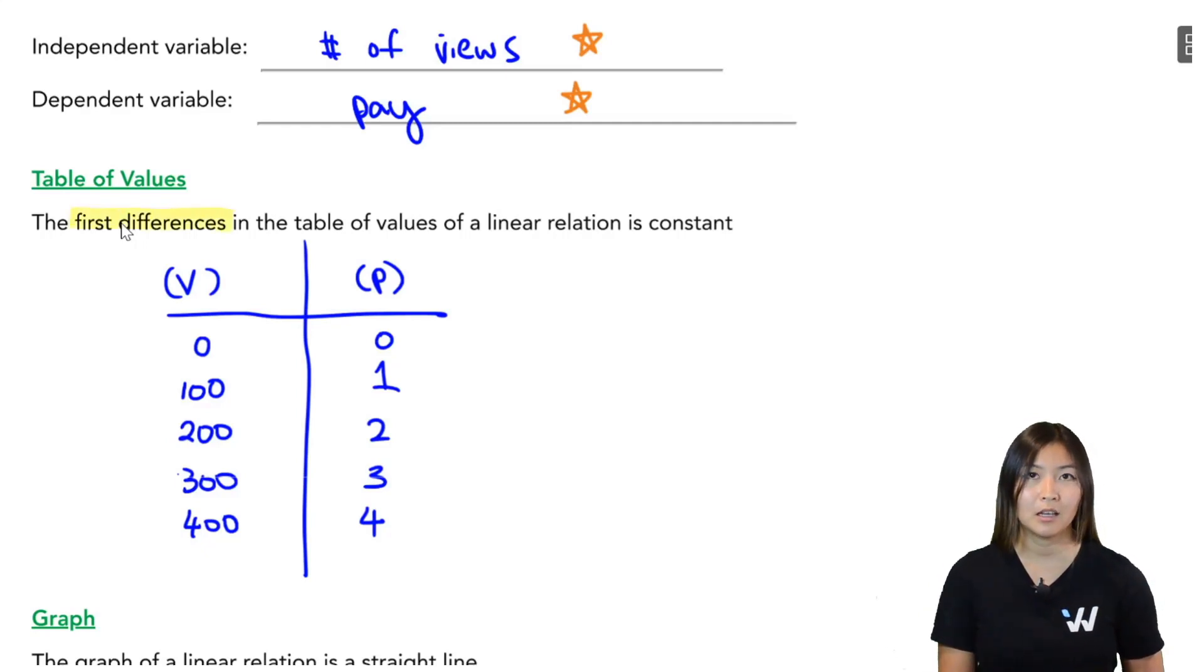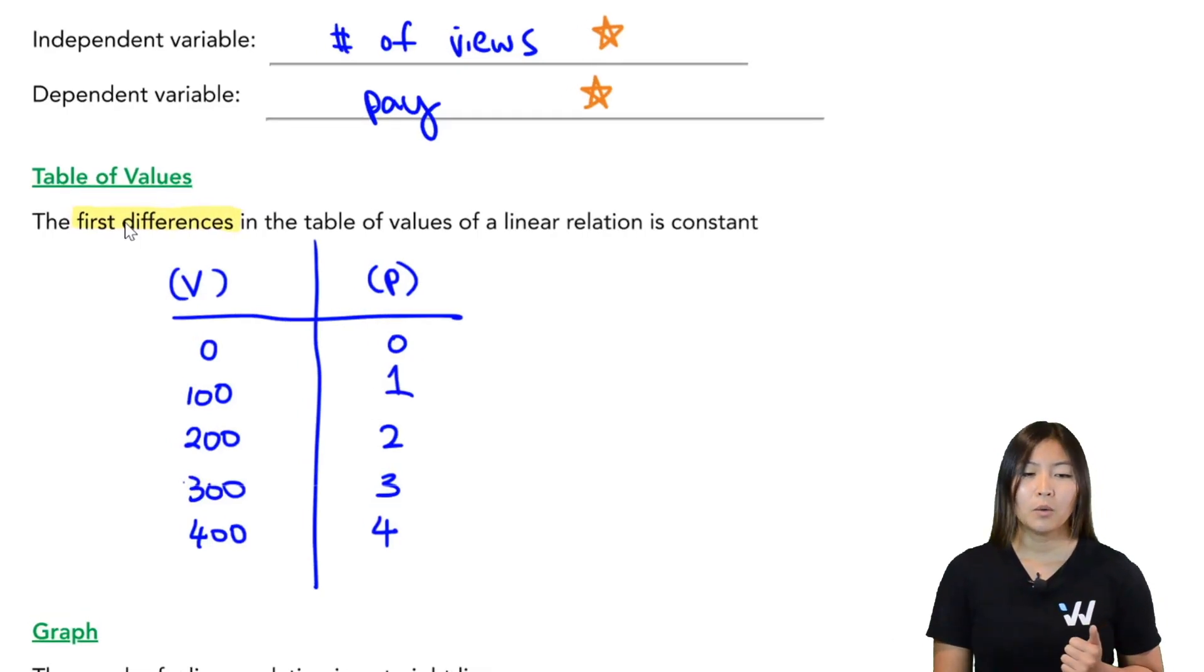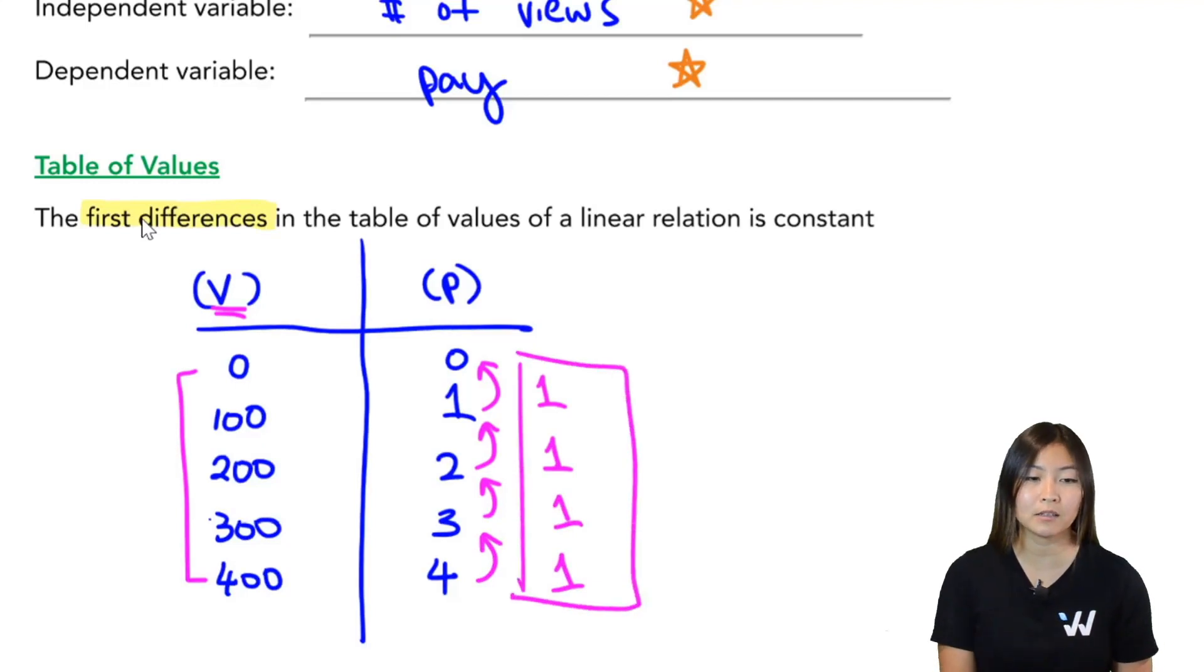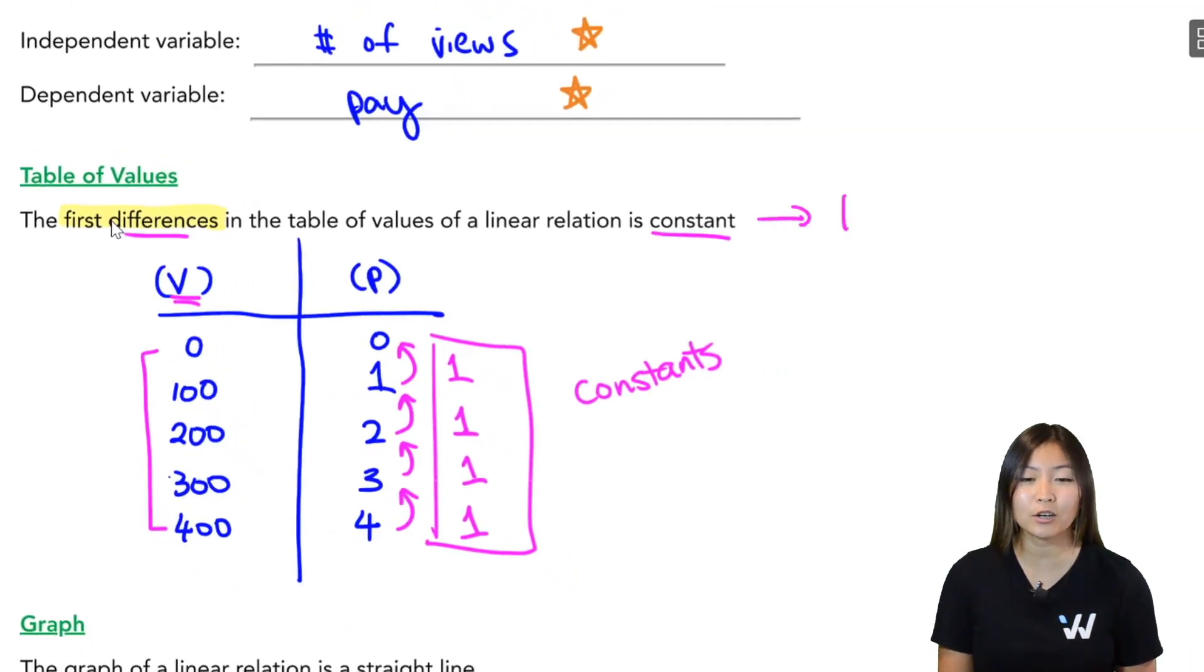Now that I have this table of values, we can see if the relationship is linear by looking at the first differences. Just a reminder, what are first differences? Well, if I look at my independent variable here, these are going up by a constant amount. Every time I'm going up by 100. So what I'm going to do is I'm going to subtract my dependent variables. So 1 minus 0 is 1. 2 minus 1 is 1. 3 minus 2 is 1. 4 minus 3 is 1. These numbers here represent my first differences. Remember, differences is just subtraction. That's exactly what we did. It's the first time we go and subtract these. So since these first differences are constant, I know that this is indeed a linear relation.